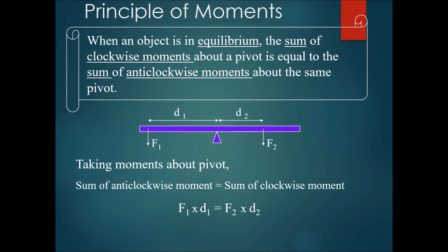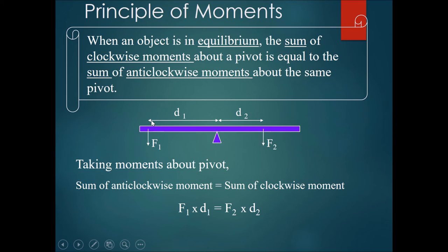The principle of moments is extremely important: when an object is in equilibrium, the sum of clockwise moments about a pivot equals the sum of anticlockwise moments about the same pivot. Equilibrium means balanced. Think of a seesaw — when one person sits on each side with roughly equal weight distribution, they can take turns moving up and down.